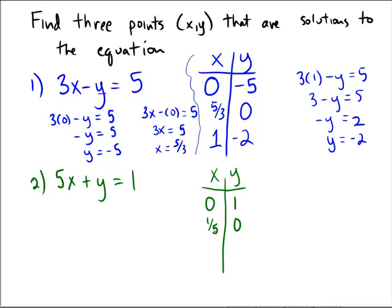For the last one, I've got to do a little bit of work. So again, I will choose to let x equal one. So I get five times one plus y equals one. Five plus y equals one. Subtracting five would give me y equals negative four. And there's three points that satisfy this particular linear equation.